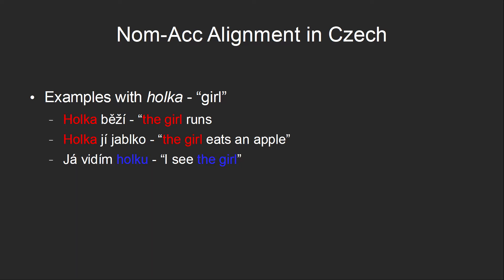'Holka jí jablko' — the girl eats an apple. And 'já vidím holku' — I see the girl. When the girl is the subject or the agent, the word 'holka' appears in its base nominative form. But when it is the patient, it changes to the accusative form 'holku.'